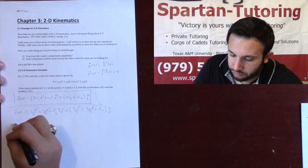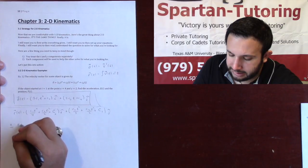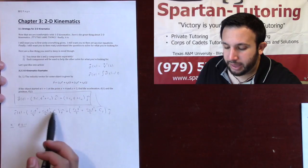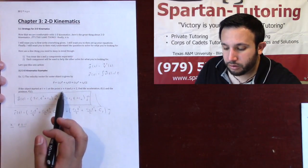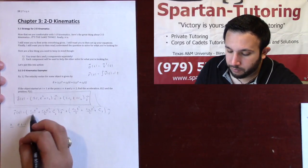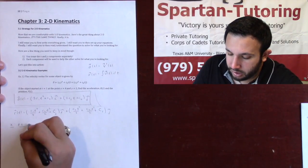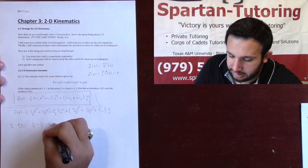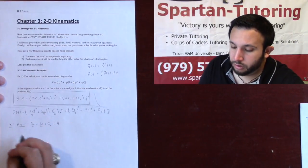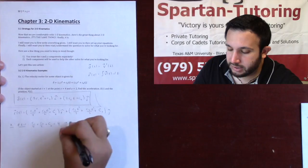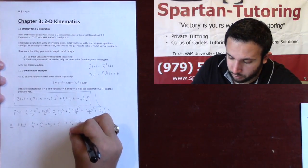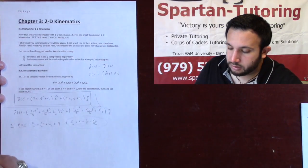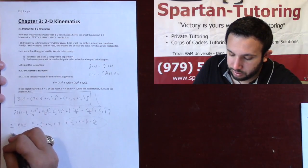And so for the x component, at t equals 1, what I'm going to do is I'm going to plug 1 into my x component and I'm going to set it equal to 4 because it said at t equals 1, x is 4. And so plugging 1 into there, I'm going to have c1 over 4 plus c2 over 2 plus cx all needs to output a 4 whenever I plug the 1 into there. And so solving for cx, this is simply 4 minus c1 over 4 minus c2 over 2. So I've got that perfect.